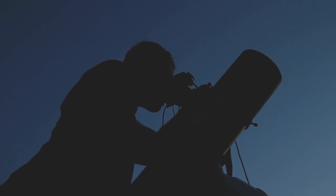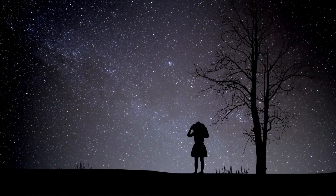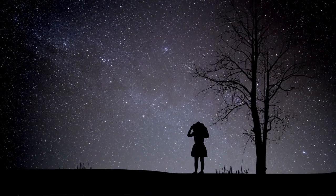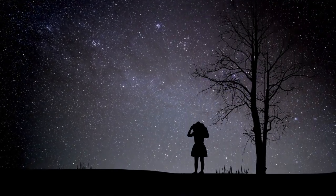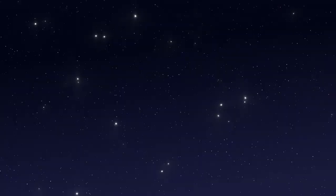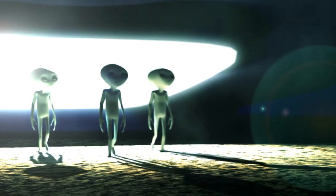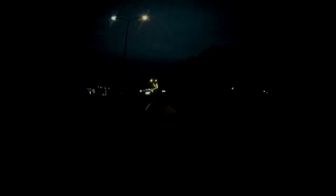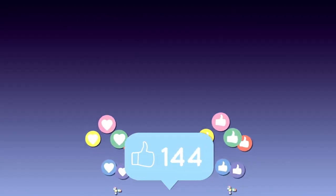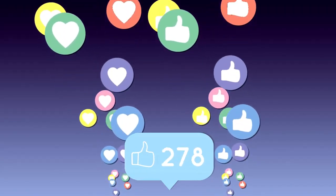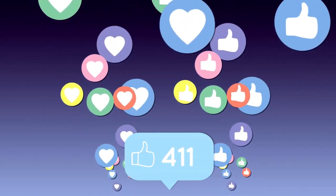In the face of Proxima b's mysteries, we are reminded of humanity's greatest strength—our relentless curiosity. The questions raised by this distant world compel us to keep looking, keep dreaming, and keep searching for our place in the cosmos. What do you think life on Proxima b would be like? Could these mysterious lights be a sign of life or something else entirely? Share your thoughts in the comments below, and don't forget to subscribe for more groundbreaking discoveries from the James Webb Telescope.